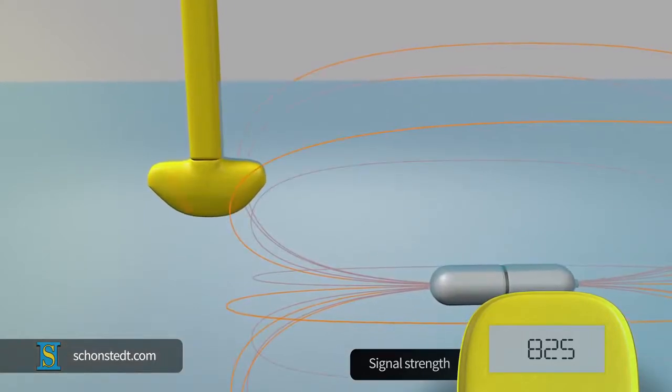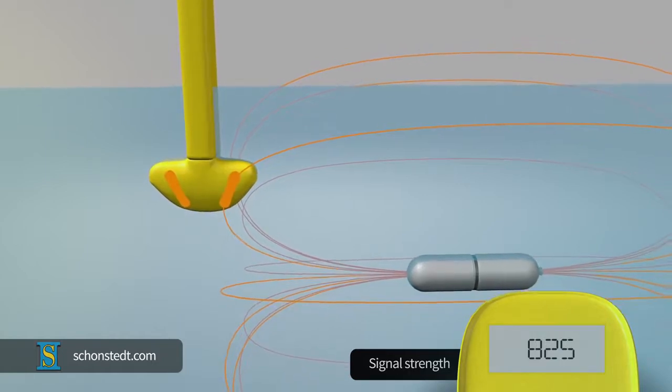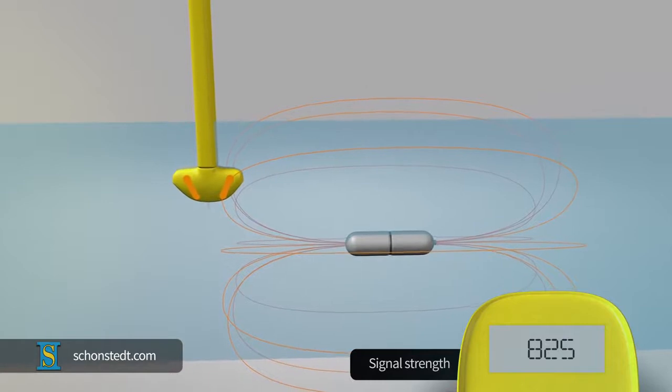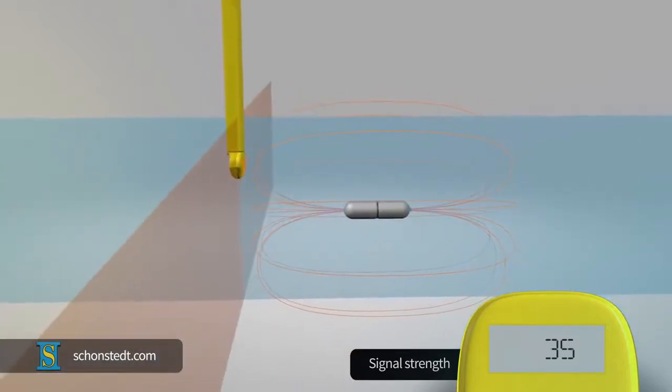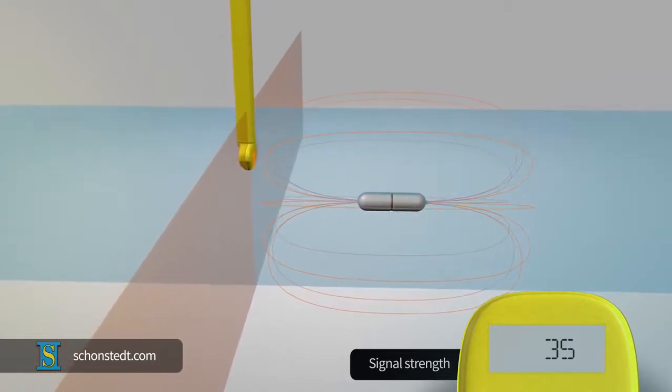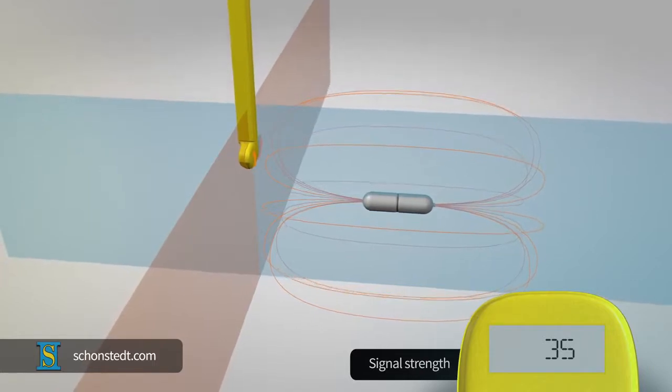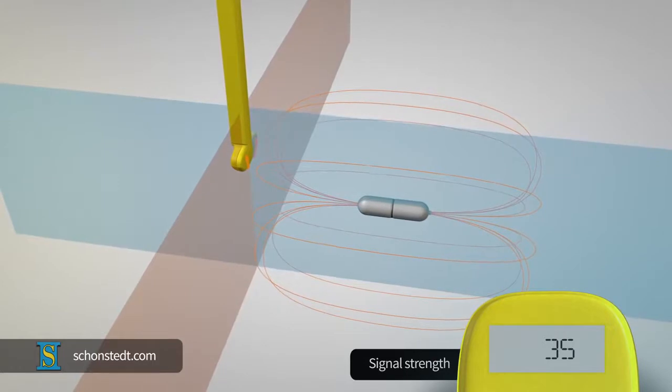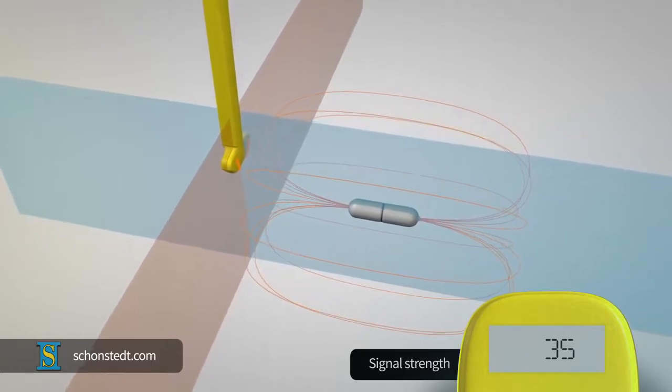In this case, the field lines of the signal emitted by the sonde flow through the sensors generating a strong signal. By contrast, the signal detected by the sensors is the weakest or null when the axis of the sonde and the axis of the sensors in the receiver are on perpendicular planes. In this case, the field lines of the signal emitted by the sonde are perpendicular to the sensors, generating essentially no signal or a minimal signal.